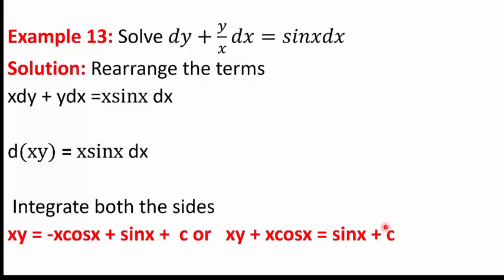In the thirteenth example, we solve dY + (Y/X)dX = sin X dX. Multiplying through by X: X dY + Y dX = X sin X dX. The left side is d(XY) and the right side has only X terms. Integrating both sides — the right side by parts — gives XY + X cos X = sin X + C.